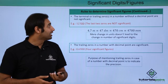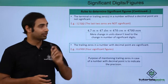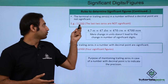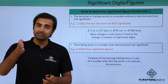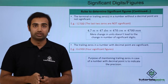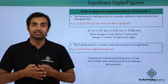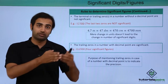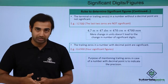The terminal or trailing zeros in a number without a decimal point are not significant. So in the example 12300, the last two zeros are trailing zeros and there is no decimal point in the number, therefore these zeros will not be considered significant. However, if there is a decimal point in this number, these two zeros will become significant.